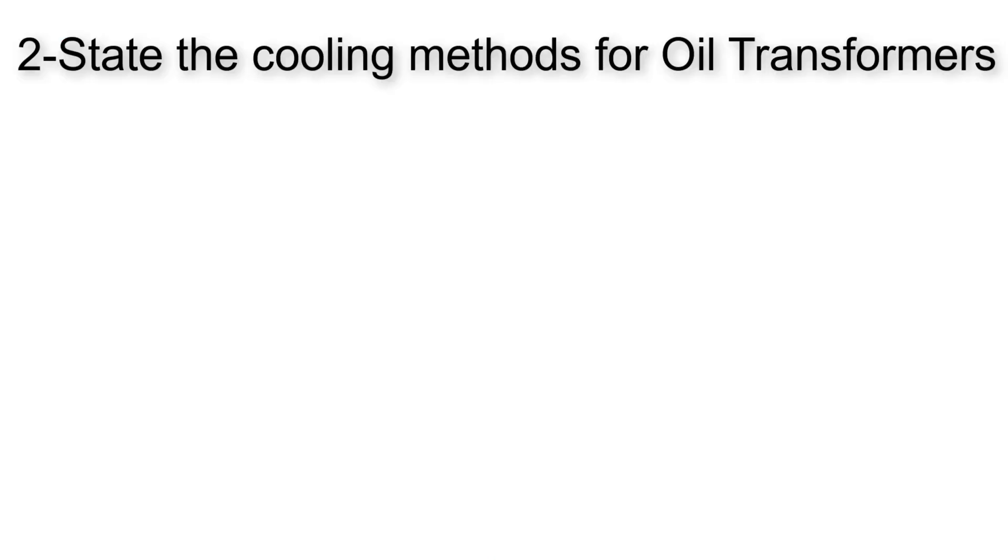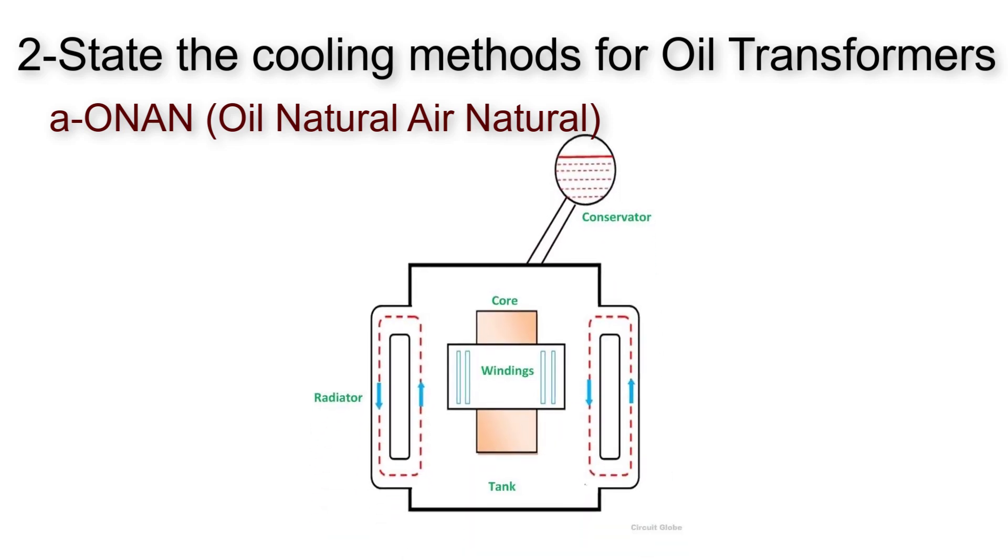The second question here is state the cooling methods used for oil transformers. Here we have ONAN, oil natural air natural. The oil moves naturally on the radiators and the air flows naturally through the radiators to cool down the oil without any interference.